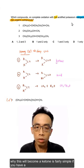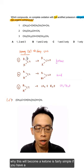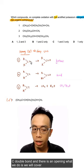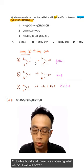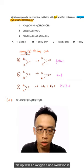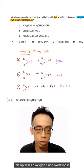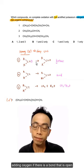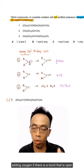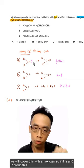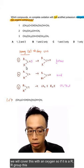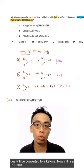One way to deduce why this will become a ketone is fairly simple. If you have a C double bond and there's an opening, we cover this with an oxygen. Since oxidation is adding oxygen, if there's a bond that is open, we cover this with an oxygen. So if it is an R group, this will be converted to a ketone.